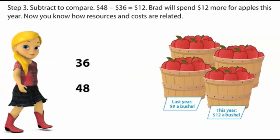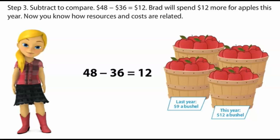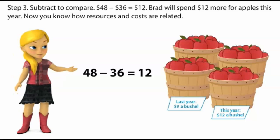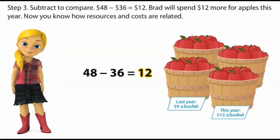Step three: subtract to compare. Forty-eight dollars minus thirty-six dollars equals twelve dollars. Brad will spend twelve dollars more for apples this year. Now you know how resources and costs are related.